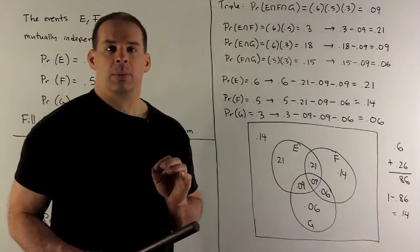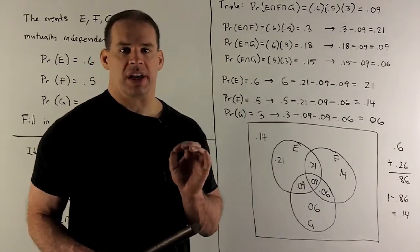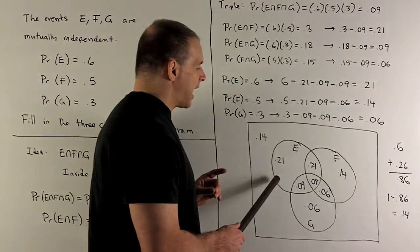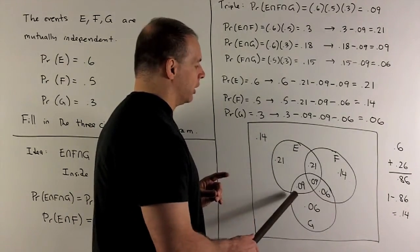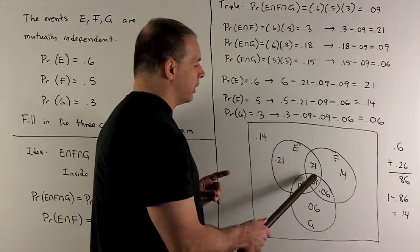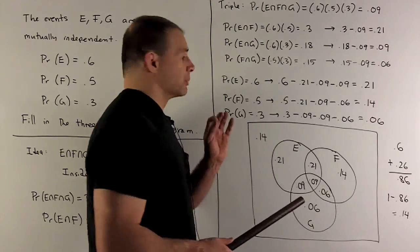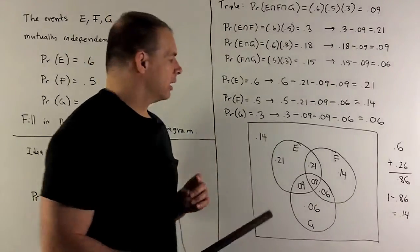Okay, probability of E we know is 0.6, so we just want to fill in what's outside of our intersections, so 0.6 has to add up to this circle here. We already know these three items. So if I add them up, I'm going to get 0.39. If I subtract that off of 0.6, we get 0.21.